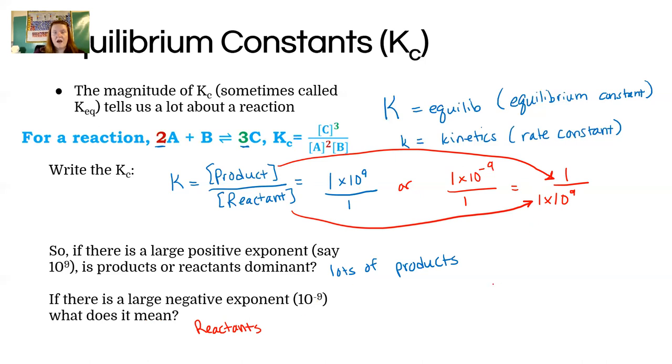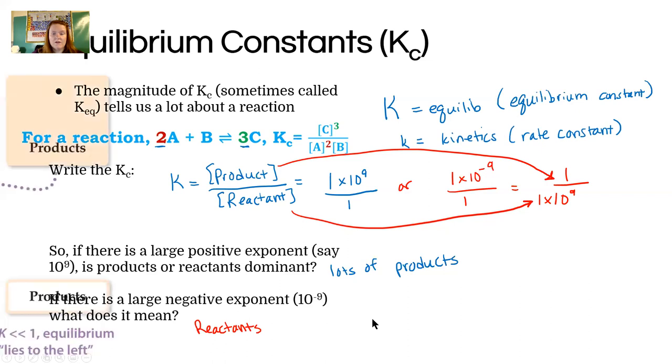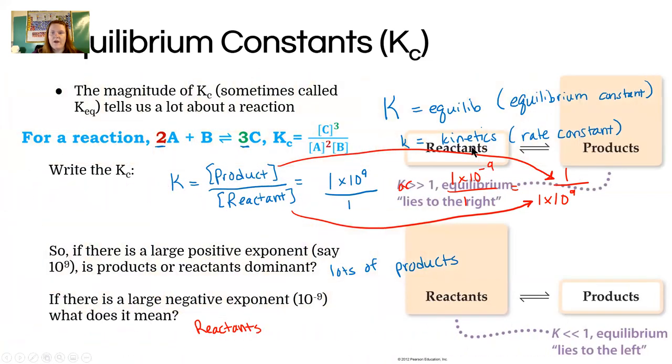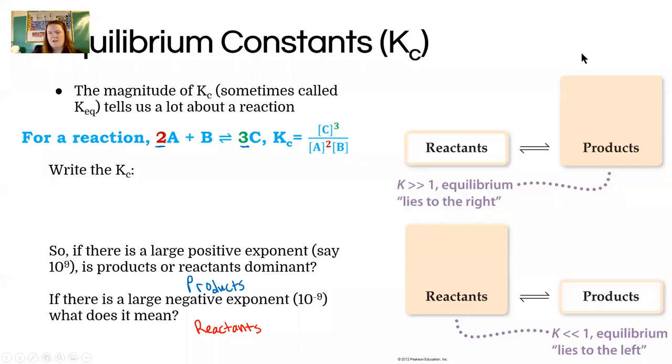This is important because, as it turns out, equilibrium constants can span a huge range, all the way, you know, 10 to the 12, all the way down to 10 to the negative 12. It's crazy. So understanding what those values mean is really important. It gives you a snapshot into what chemicals are actually running around in the solution.